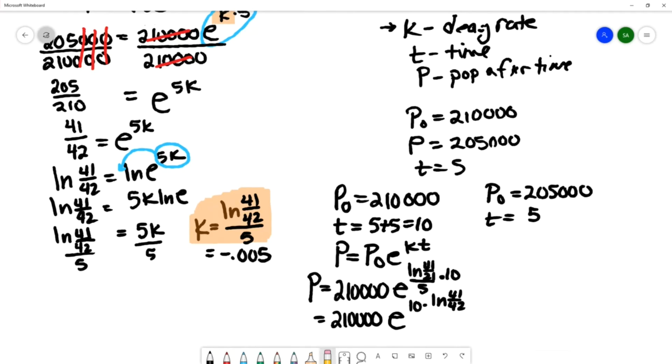This right here should say 42. And if I was going to use the other option, I would write this as P equals 205,000 e^(5 × ln(41/42)/5).